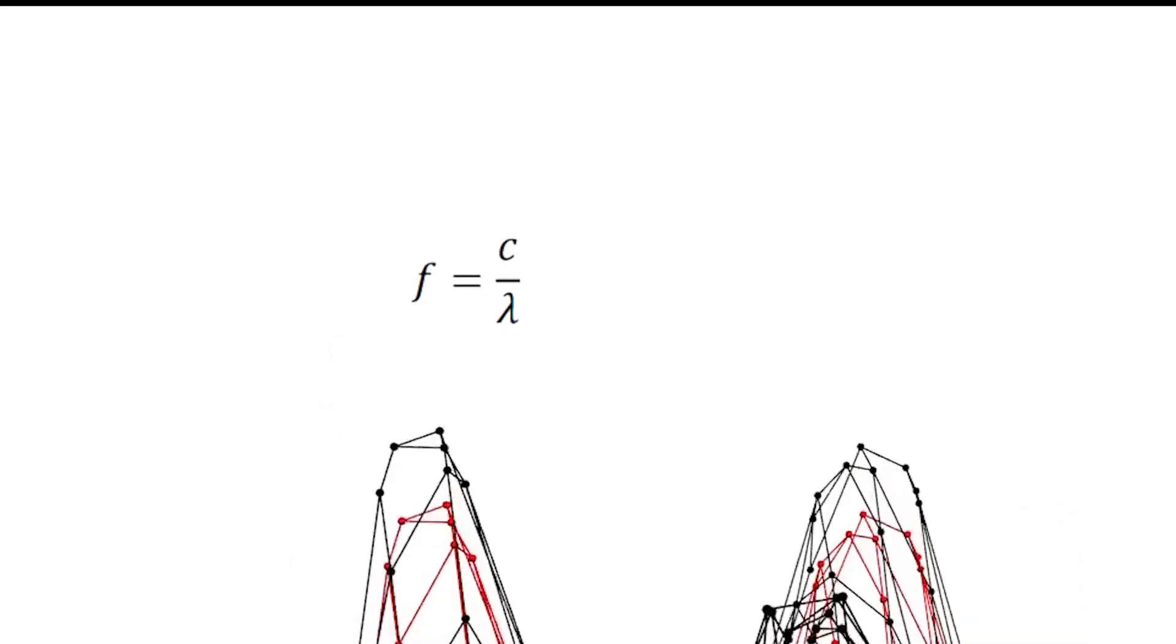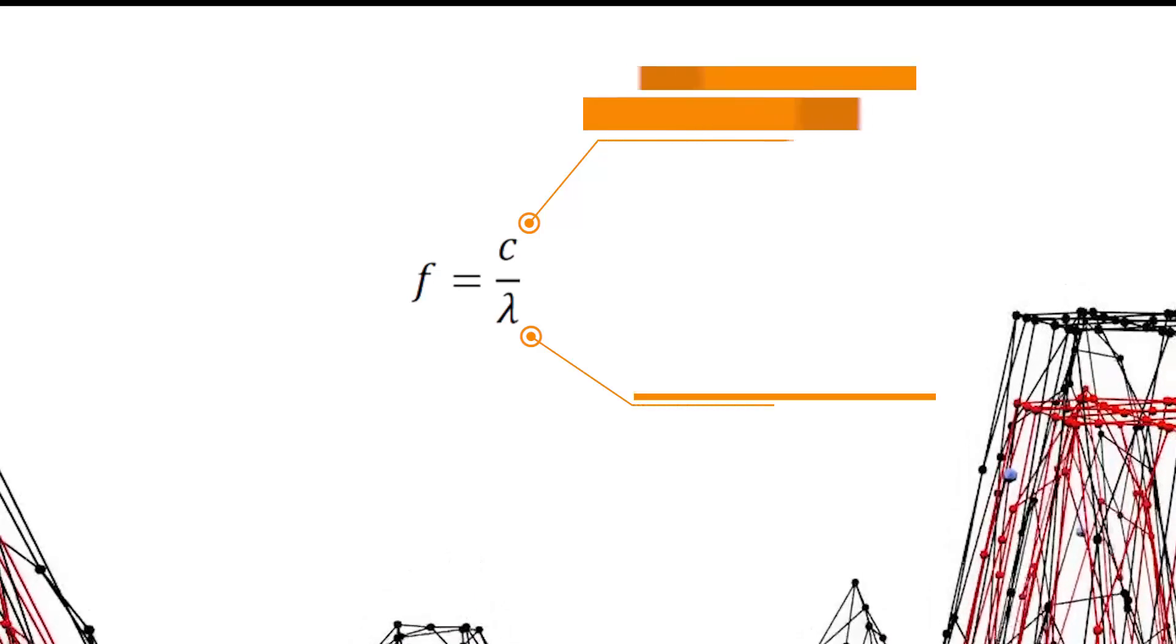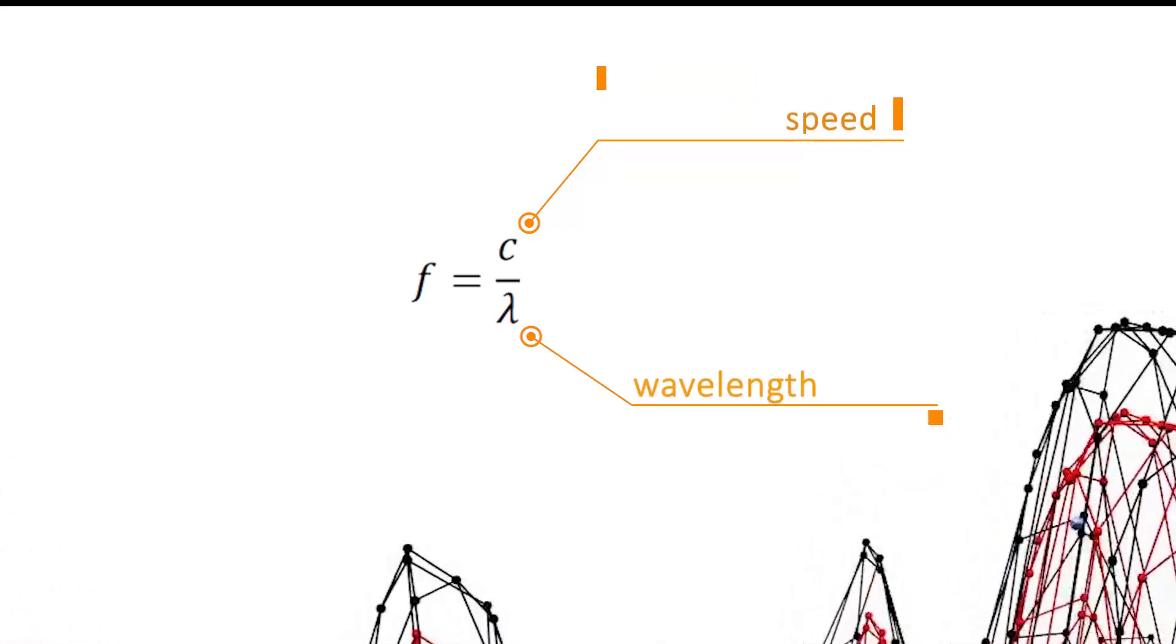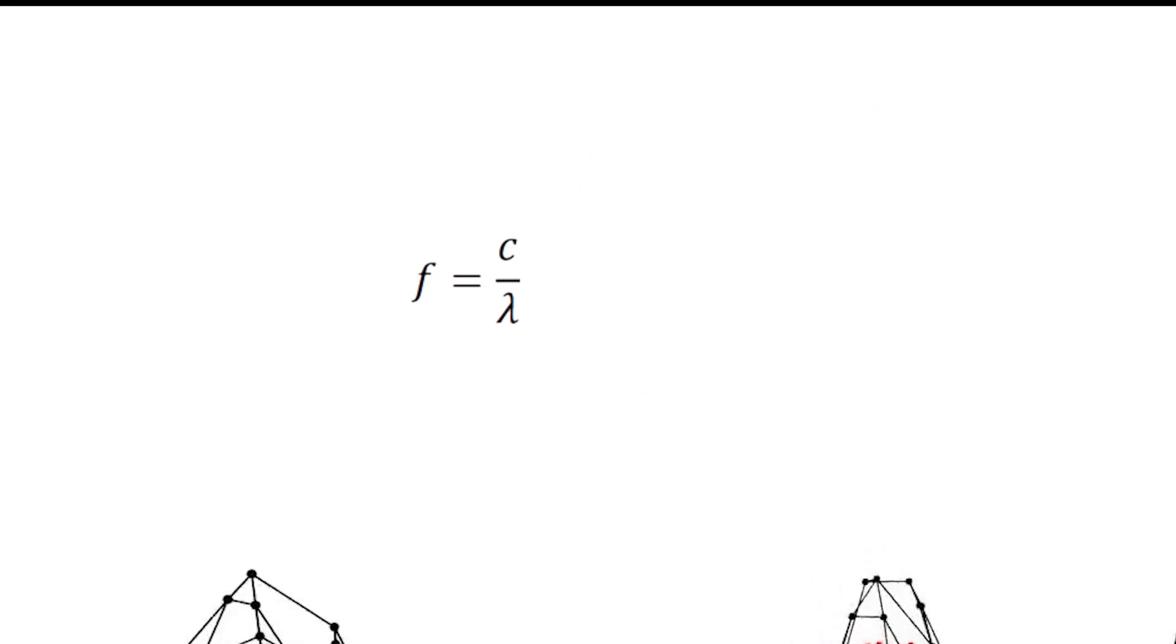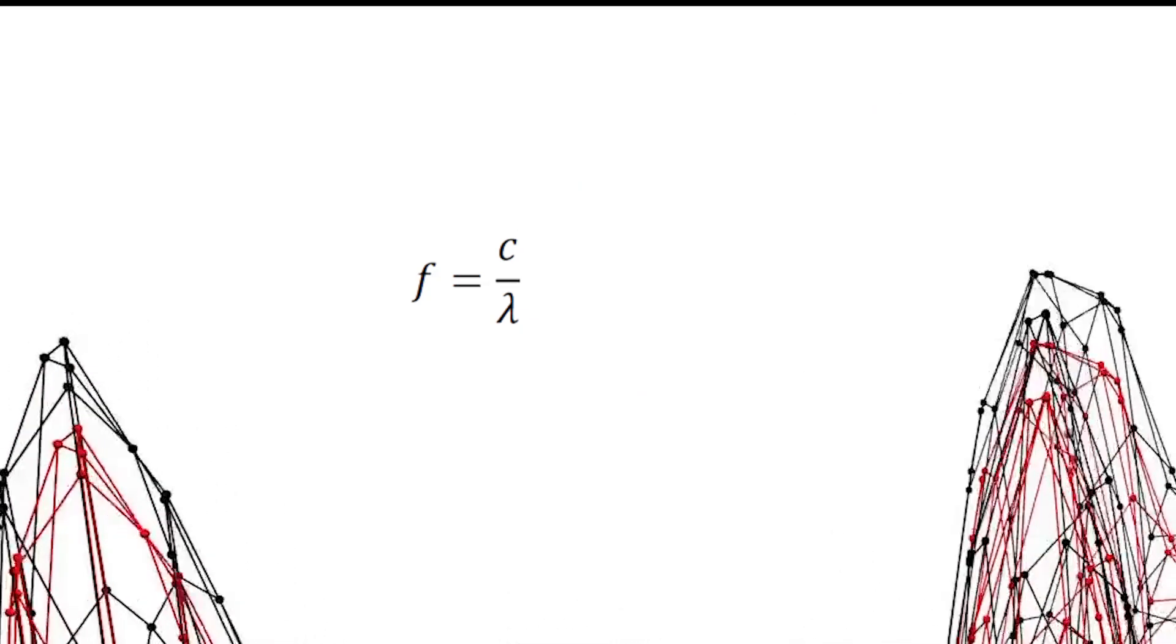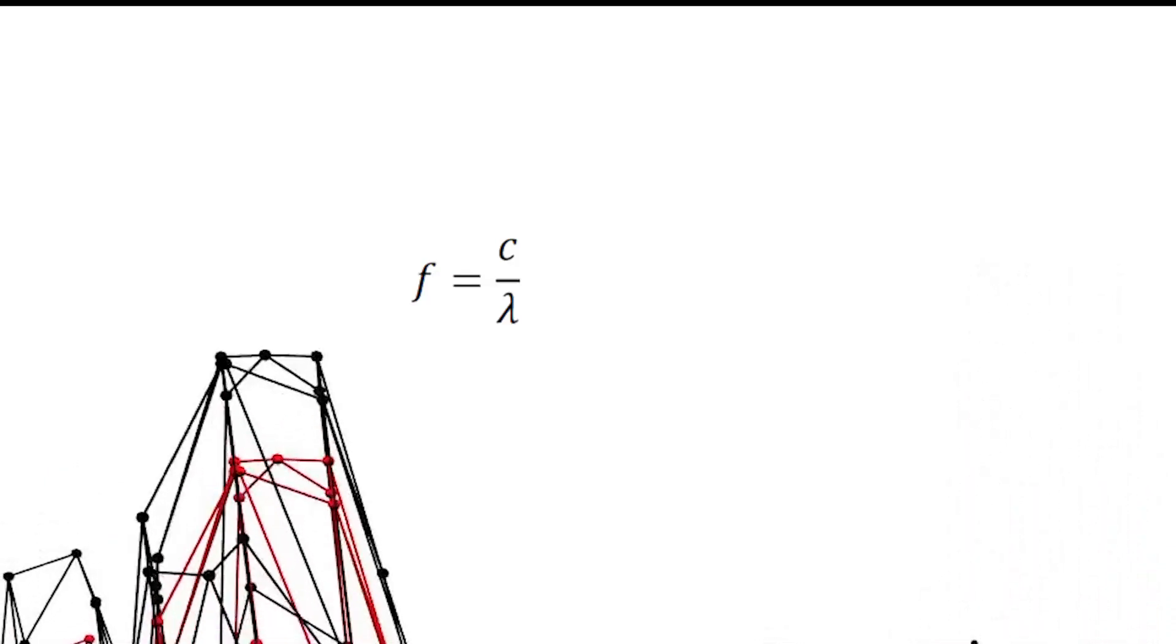The first equation we'll talk about is F equals C over lambda, where F is frequency, of course C is the speed, and lambda is the wavelength. Frequency is measured in Hertz, kilohertz, or megahertz, or any variation of Hertz. It can also be expressed as cycles per second.